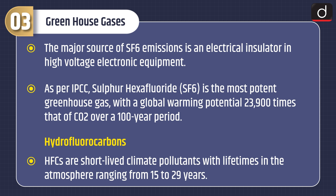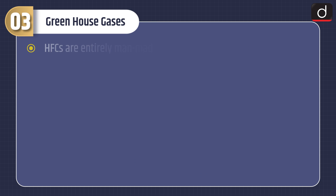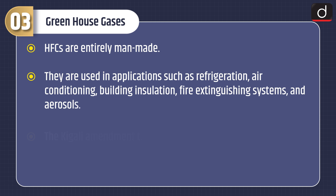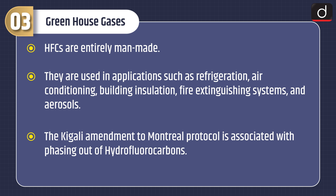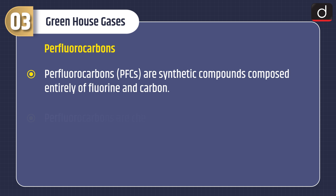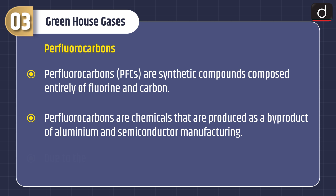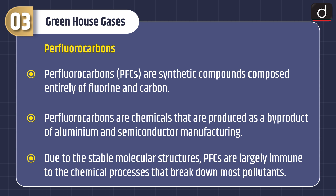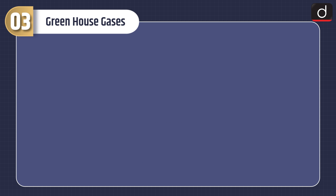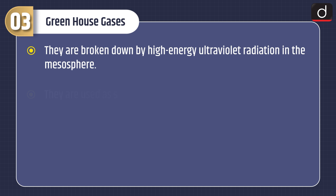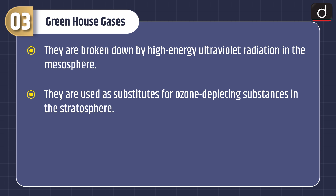Fifth, hydrofluorocarbons (HFCs): HFCs are short-lived climate pollutants with atmospheric lifetimes ranging from 15 to 29 years. They are entirely man-made and used in applications such as refrigeration, air conditioning, building insulation, fire extinguishing systems, and aerosols. The Kigali Amendment to the Montreal Protocol is associated with phasing out of HFCs. Sixth, perfluorocarbons (PFCs): synthetic compounds composed entirely of fluorine and carbon, produced as a by-product of aluminium and semiconductor manufacturing. Due to their stable molecular structures, PFCs are largely immune to the chemical processes that break down most pollutants. They are broken down by high-energy ultraviolet radiation in the mesosphere and are used as substitutes for ozone-depleting substances.